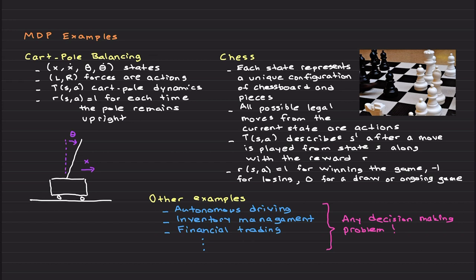You can consider other examples — actually any decision making problem can be put into the MDP format. For autonomous driving, the goal is to train a self-driving car to navigate through traffic and reach a destination safely. The state represents the car's position, velocity, as well as the positions of other vehicles, pedestrians, and obstacles. Actions are accelerate, decelerate, turn left, turn right. The transition function describes how the state of the environment changes when the car takes an action from state S. Rewards: plus 10 for safely reaching the destination, minus 5 for collisions, minus 1 for traffic violations.